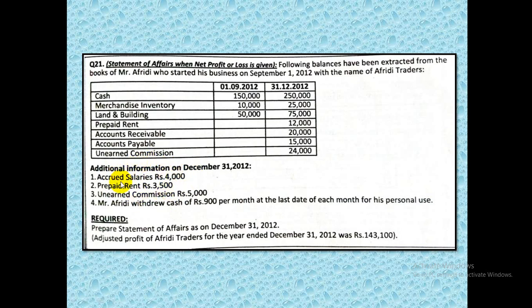After calculating capital at start, we look at the adjusting data given in the question. Let's revise the adjusting entries we prepare when financial statements are done. Accrued salaries means salaries which are not yet paid — for accrued salaries we always prepare the entry: salary expense debit, salary payable credit. Since we are preparing the statement of affairs and not the profit and loss account, we will consider salary payable, not salary expense.